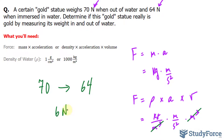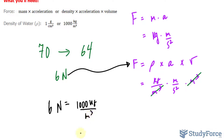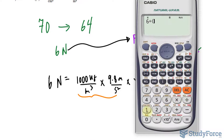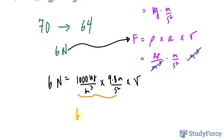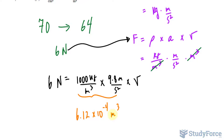To find the volume of the water displaced, we substitute 6 newtons into F in the formula and solve for volume. According to Archimedes' principle, the displaced volume of water equals the total volume of the object. So: 6 = 1,000 kg/m³ × 9.8 m/s² × V. Dividing both sides gives V = 6 ÷ (1,000 × 9.8) = 0.000612 m³, or 6.12 × 10⁻⁴ m³.